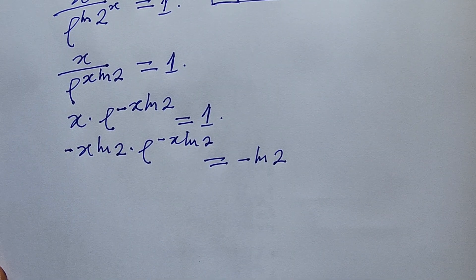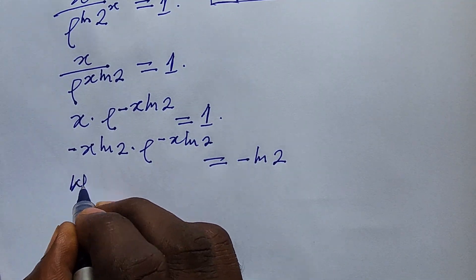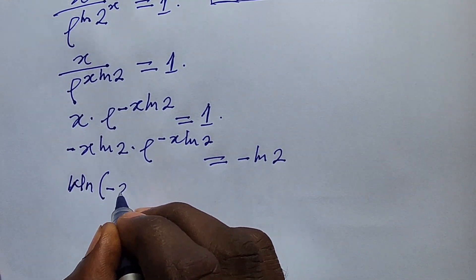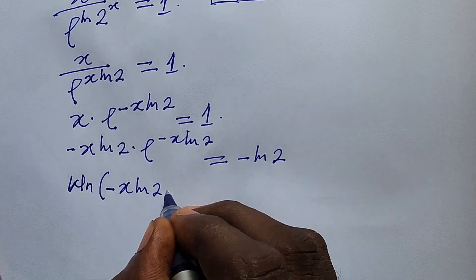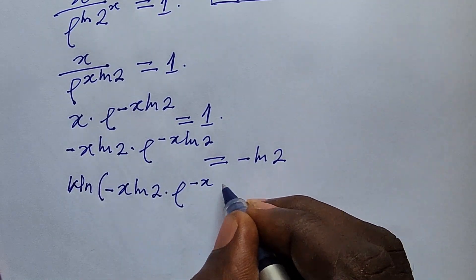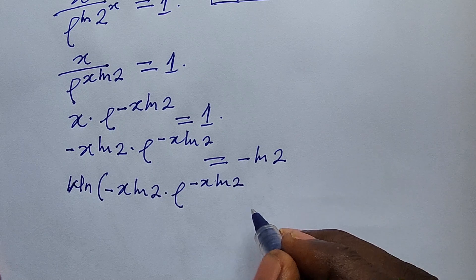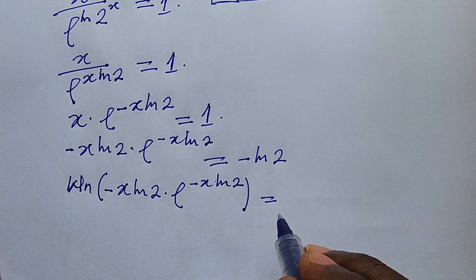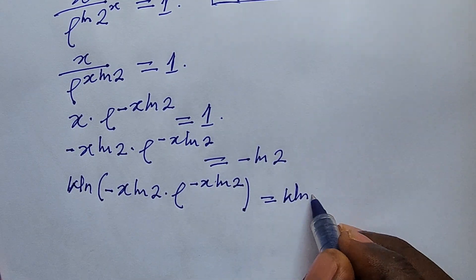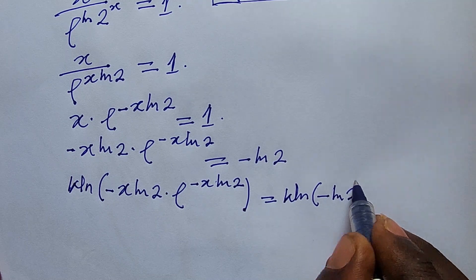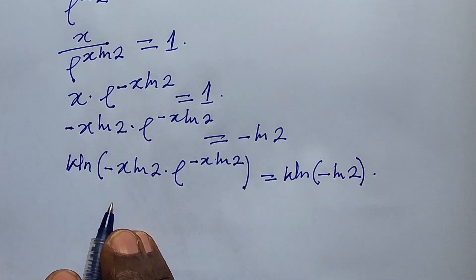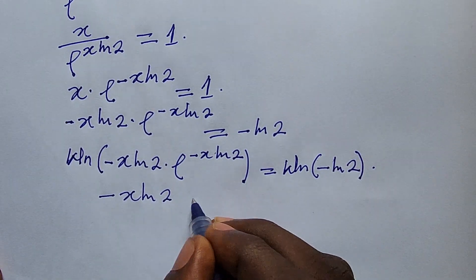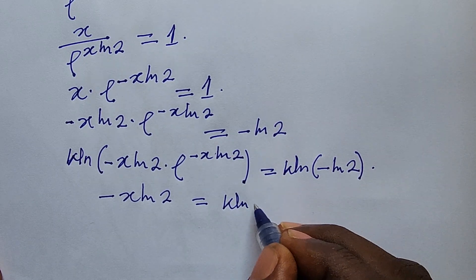Now what we have on the left matches the W function form, so we take the Lambert W function of both sides. We have W_n of minus x·ln(2) times e to the power of minus x·ln(2) equal to W_n of minus ln(2). The left-hand side simplifies to minus x·ln(2) equal to W_n(minus ln(2)).